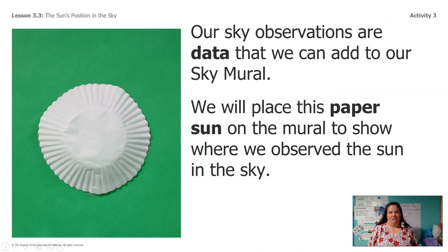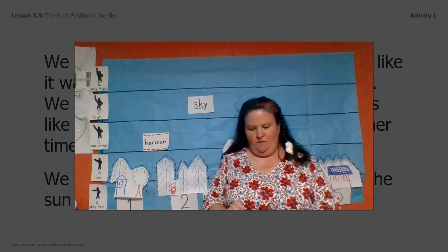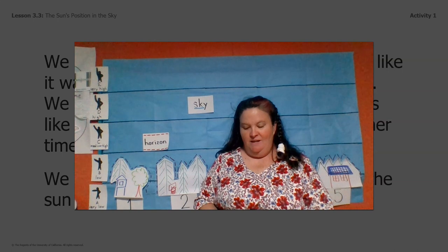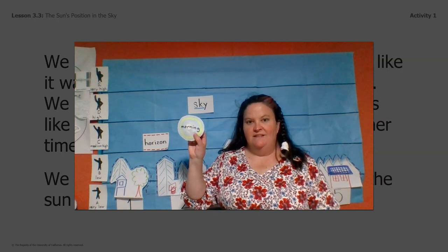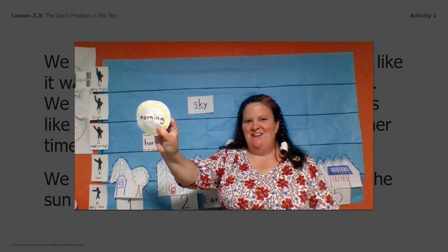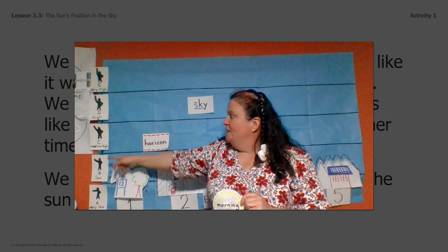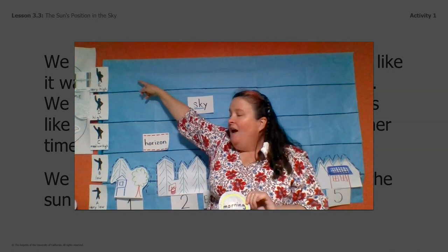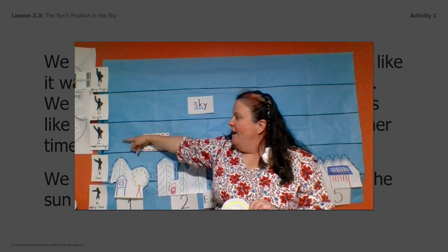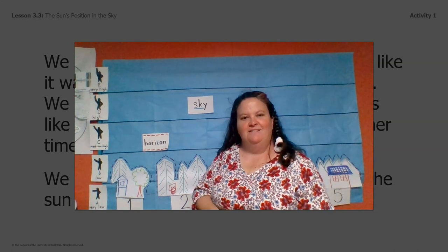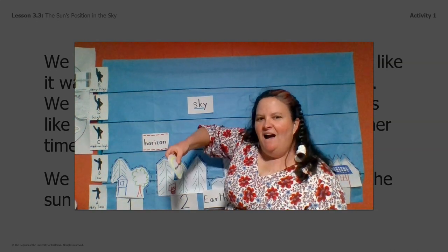Next is our sky observations and how we're going to put those sky observations on our mural. I have a paper sun and I'm going to use that to show where we observed the sun in the sky. Here I am in front of our sky mural. The first thing I want to do is put our sun to match up with the little pointing arms. So did we say the sun was very high, high, medium high, low, or very low? Yeah, I agree — it was low.